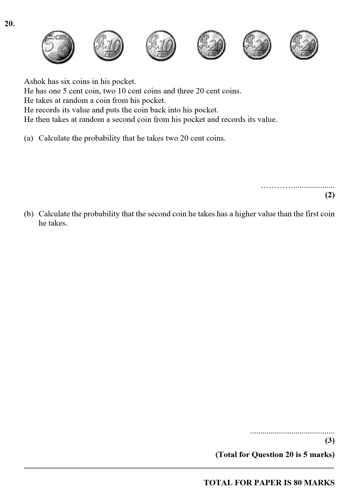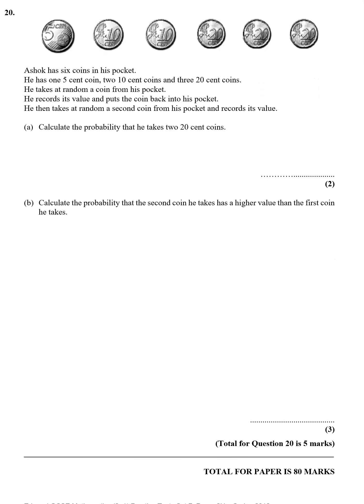So, let's have a look. A lot of information. 6 coins: one 5, two 10s, three 20s. Takes a random coin from his pocket, he records its value and puts it back, that's quite important. He then takes the second coin from his pocket. Calculate the probability that he takes two 20 cent coins.